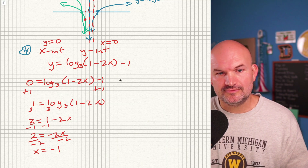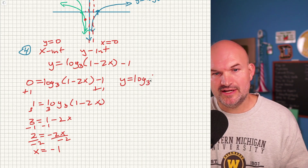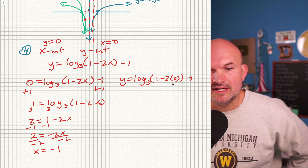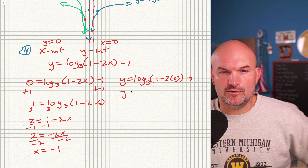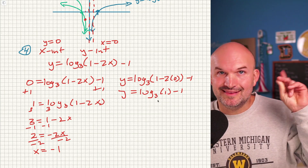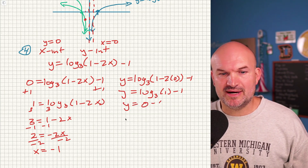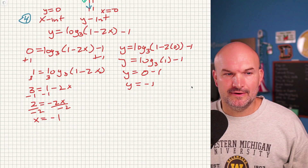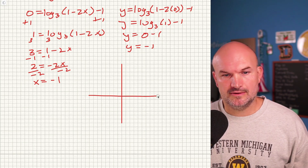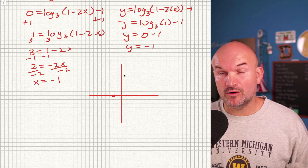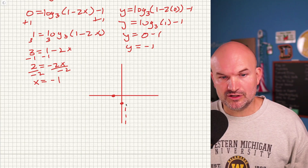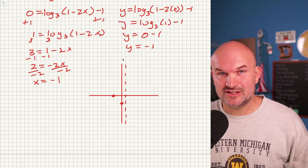To find the y-intercept, set x = 0: y = log base 3 of (1 − 2·0) − 1 = log base 3 of 1 − 1. Since 3 to the power 0 equals 1, log base 3 of 1 = 0. So y = 0 − 1 = −1. Our y-intercept is (0, −1). So we now have: x-intercept at (−1, 0), y-intercept at (0, −1), and vertical asymptote at x = 1/2.